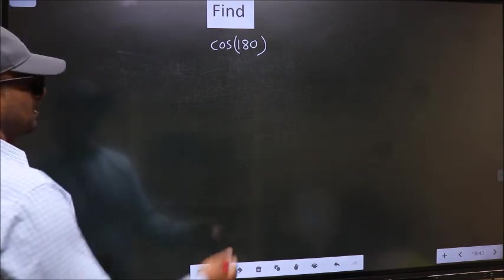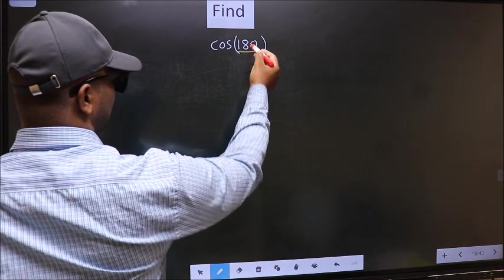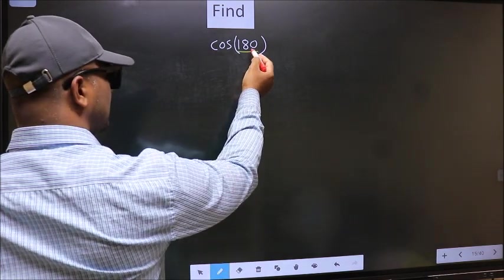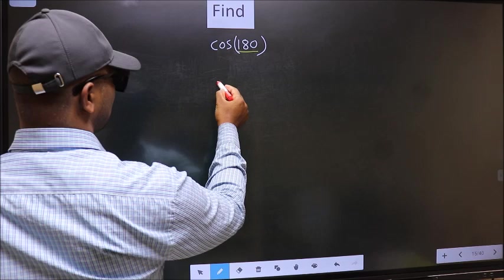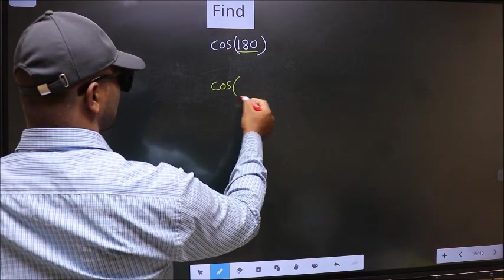Here we have 180, and 180 is a multiple of 180. So what we should do is, in place of 180,